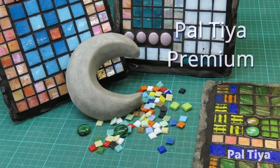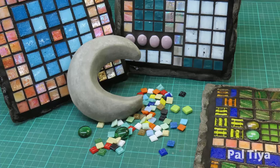In this video we'll be showing you how to make a smooth moon, perfect for applying mosaics onto, with approximately half a cup of Paltai Premium Sculpting Medium.